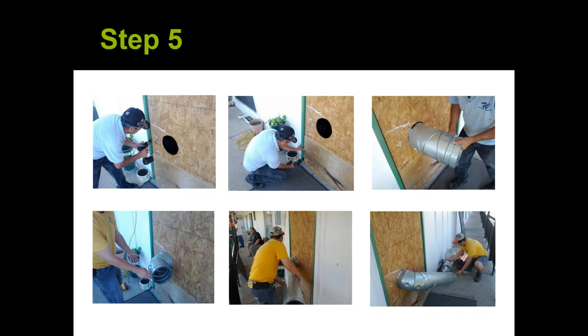Here you can see my guy screwing the panel to the door, then hooking up the 8-inch double-wall flue pipe. We offset the heater so we're not shooting flame directly into the apartment. By the time it comes through the flue pipe, it's just extremely hot air.